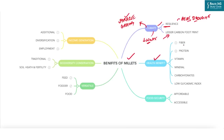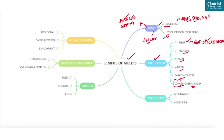The next benefit is health. Millets are highly nutritious and can help in managing and preventing various health conditions like obesity and diabetes. They are rich in fiber, which improves gut microbiota, and are also rich in protein, vitamins, and minerals. They are a good source of complex carbohydrates and have a low glycemic index — meaning blood sugar levels spike less after consuming them — which helps in controlling weight and blood sugar, and consequently reduces the risk of heart diseases and cancers. Millets are also gluten-free.